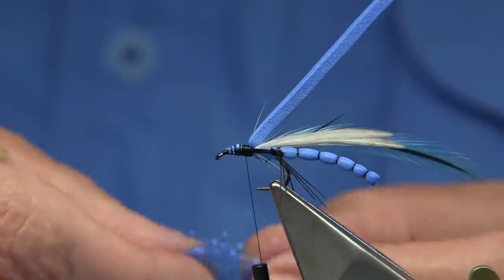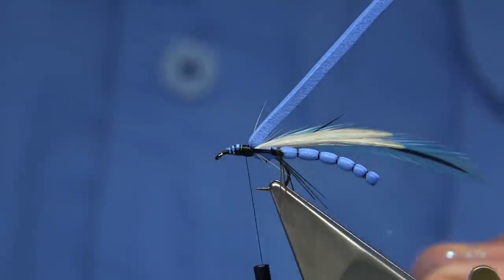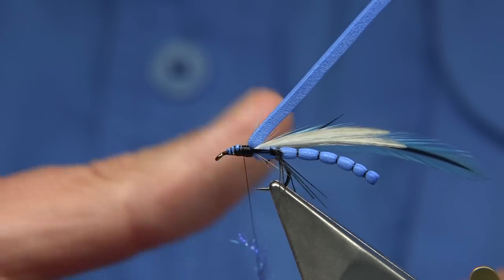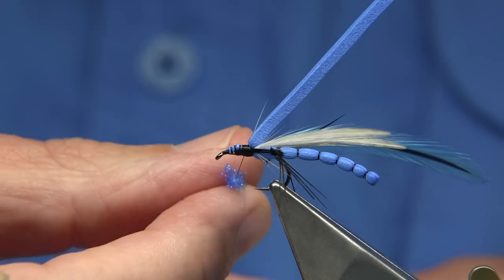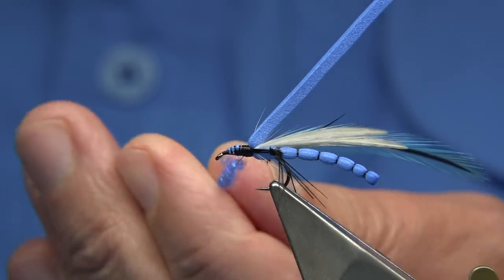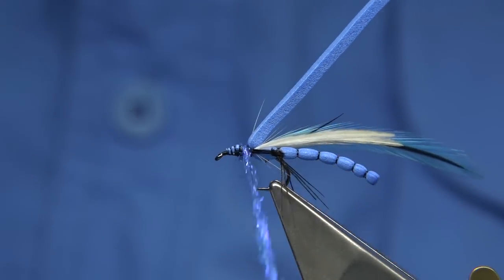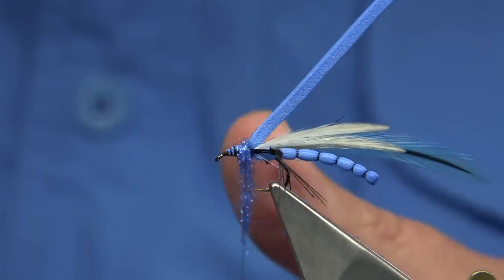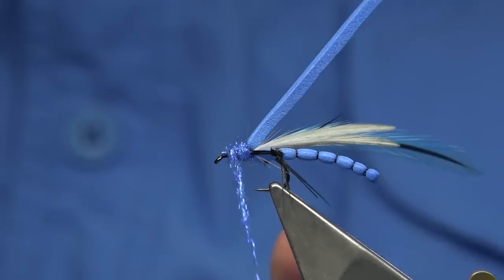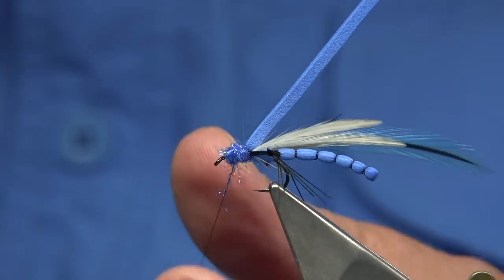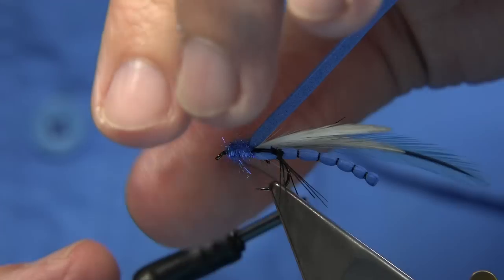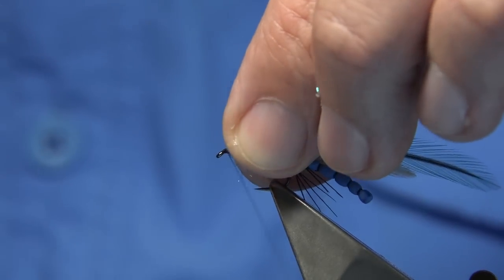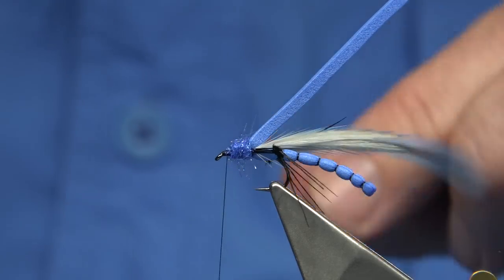I'm going to put this blue, this is blue diamond brite. I think it's Wapsi actually. It's a UV blue. Just going to lightly dab it on, tidy things up, work my way down towards the eye. You could use whatever fur you have or anything, or you could just use the black thread.